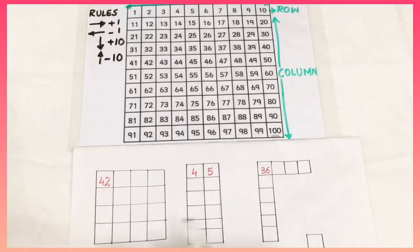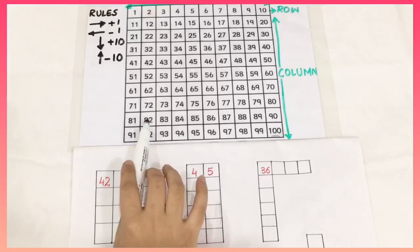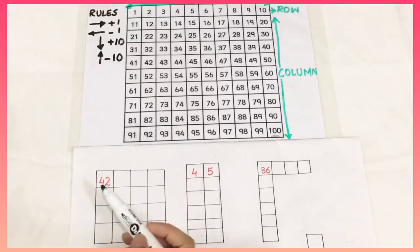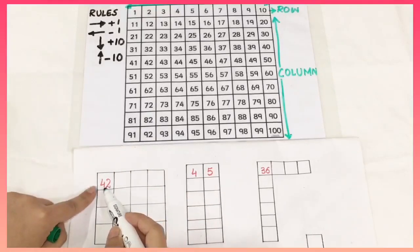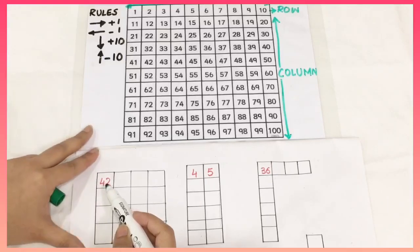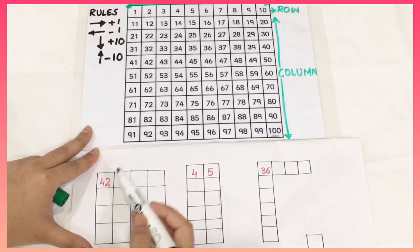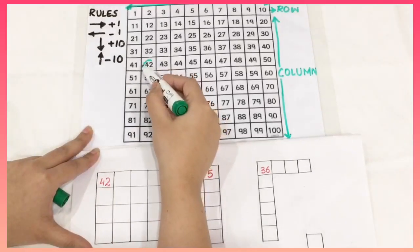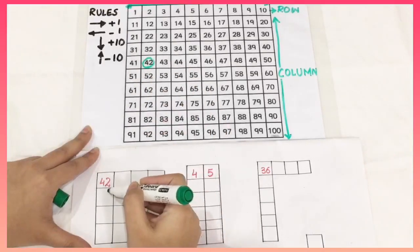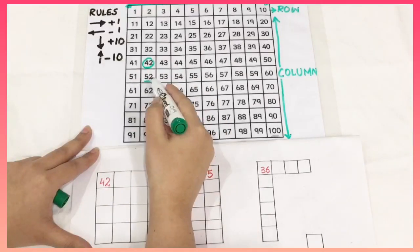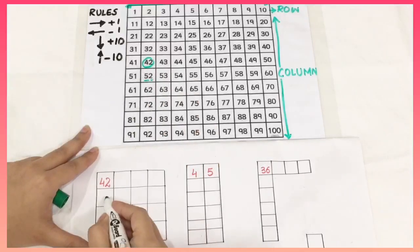Now we are going to fill these broken sections from the 100 square chart. We will take the help of the 100 square chart. First of all, I have this number 42. I am going to identify 42 in the 100 square chart. 42 is here. I am going to fill the column below. You can see that below it is 52.